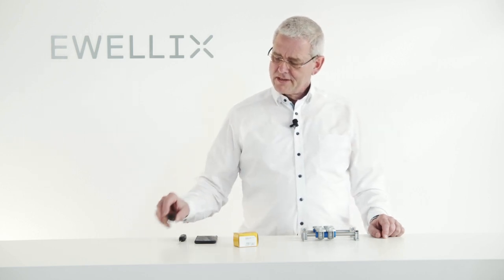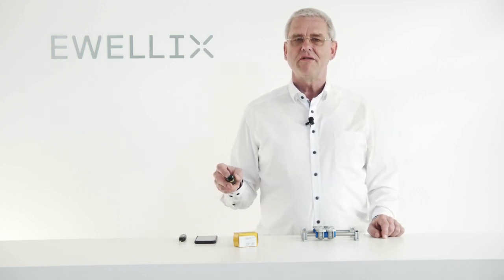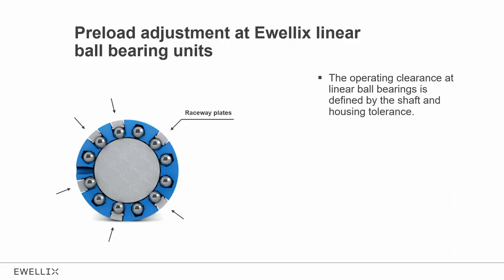Ewellix linear ball bearings have a raceway design. With the raceway design, where in this picture example we have six raceways above and below the balls, the operating clearance of such a linear ball bearing is defined by the shaft and the housing. That gives the optimum performance of a bearing.